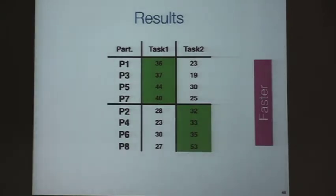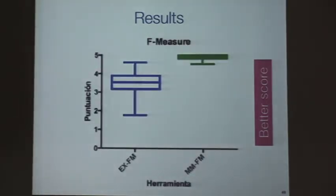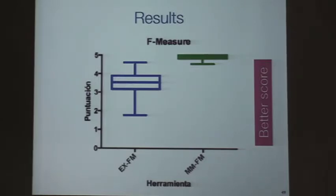At the end of the experiment, we talked with them and asked what they thought about MultiPile Matrix and what could be improved. These are the results — eight participants. The time for Excel is shown in green and for MultiPile Matrix in white. We concluded that participants using MultiPile Matrix were faster to answer questions than using Excel. The F-measure metric combines precision and recall. Participants using MultiPile Matrix also got better scores than using Excel.